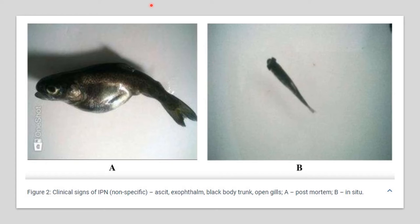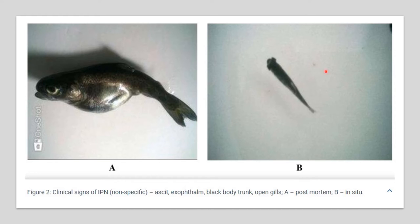A figure showing the clinical signs of IPN is presented. These signs are all non-specific and include ascites, exophthalmos, black body, and open gills. An in situ illustration of a fry infected with IPN is also shown.